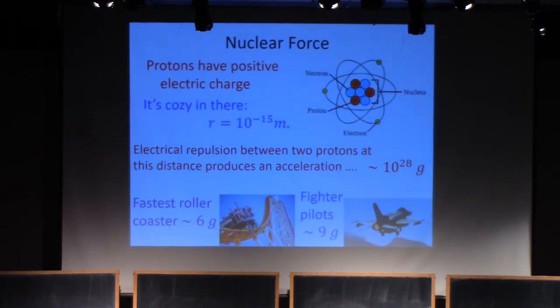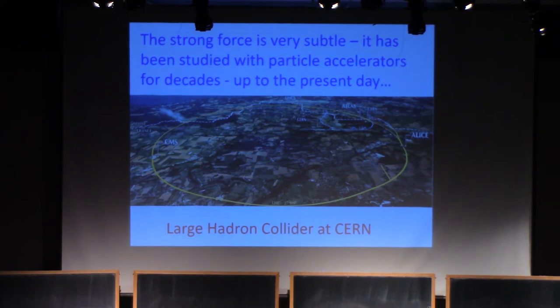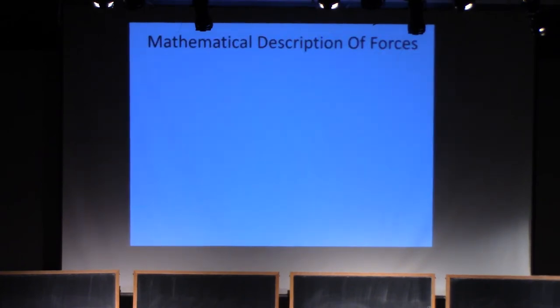Why is matter stable? Why does matter even exist? If there's this incredible force trying to blow apart the nucleus of an atom, there has to be another force which overcomes that and attracts the protons and the neutrons. I hope you now appreciate that that's also called the strong force. The strong force is very subtle. It's been studied with particle accelerators for decades up to the present day, including at the Large Hadron Collider at CERN. As a result of these experiments and the insights of many brilliant theoretical physicists, we now have a mathematical description of forces.